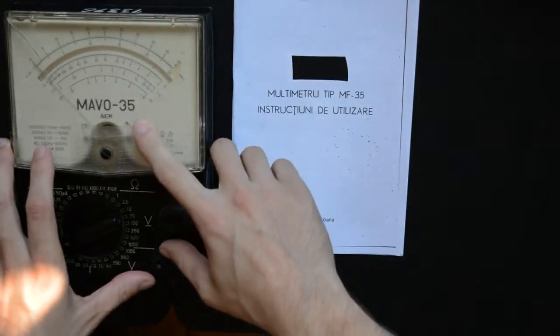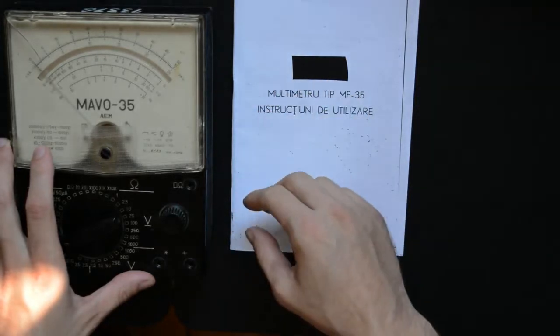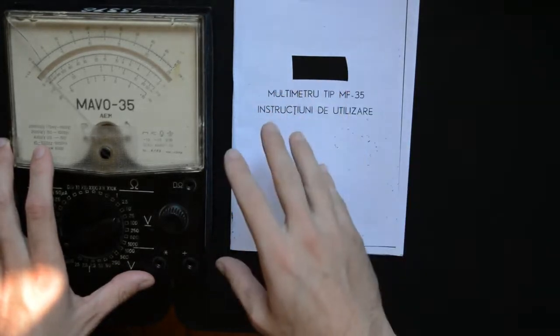And 35? Well, there was a MAVO 1 and a MAVO 2 before this, so I guess this is version 3.5. Version 3 probably didn't weigh enough.